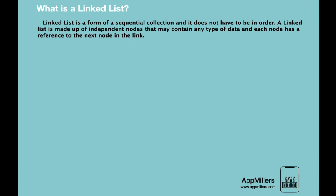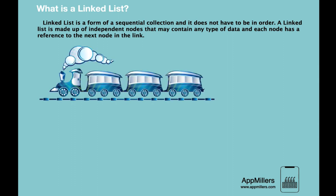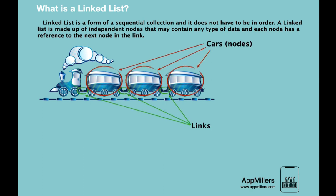In real life, a linked list data structure resembles a train. Just as in the linked list, the train is composed of nodes which are cars, and there is a link between these nodes. These cars are called nodes in the linked list, and these are the links between the cars. In the linked list, we have links between nodes as well.